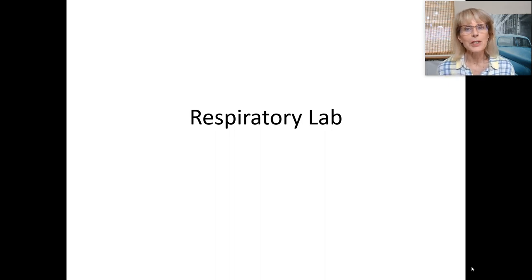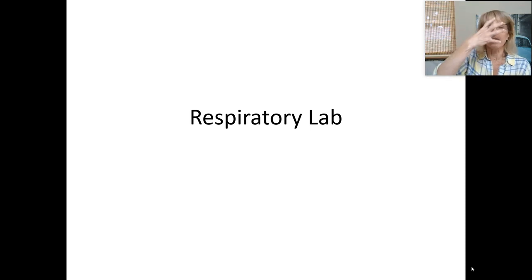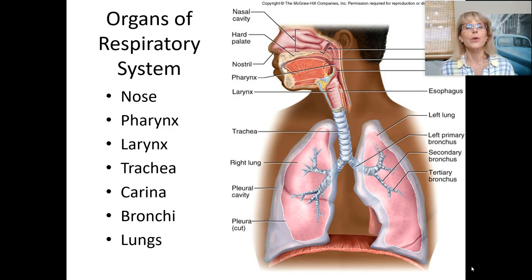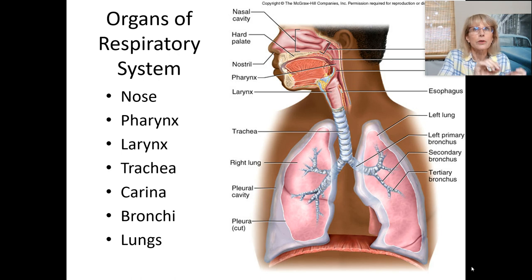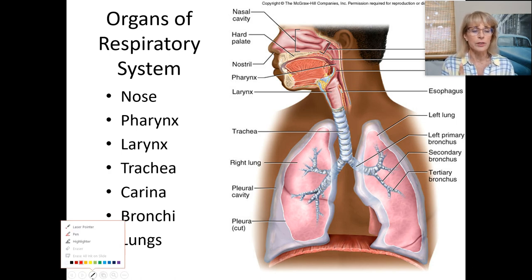We're talking about the respiratory system and its anatomy — this is probably going to be three small videos. Let's start with the anatomy of the upper airways and the throat. Just like you had to know the path that blood took throughout the cardiovascular system, I want you to know the path that air takes as it travels through the respiratory system.